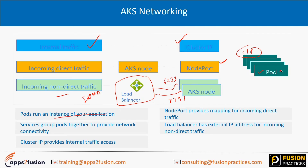You can have different nodes connecting on different ports using the load balancer. A pod runs an instance of your application. Services group pods together to provide network connectivity. Cluster IP provides internal traffic access between pods. Node Port provides mapping for incoming direct traffic by defining the port. A load balancer has an external IP address — if connecting from the internet, you connect to the load balancer which then redirects traffic to your backend.